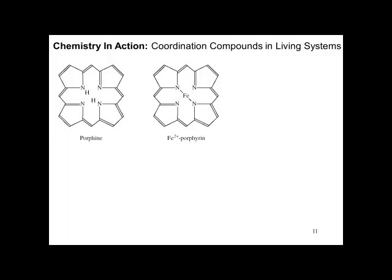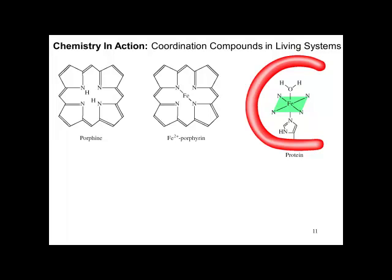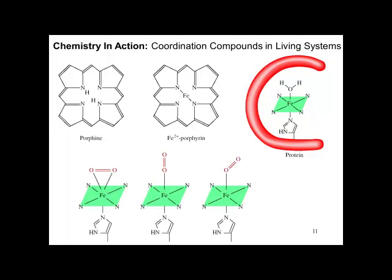Shown here are porphyrin and iron porphyrin — this forms the heme in hemoglobin. In this case we are looking at myoglobin with only one heme. Notice that the iron is hexacoordinated to the protein — to four nitrogens and to a water molecule. This is how oxygen is transported in the body.